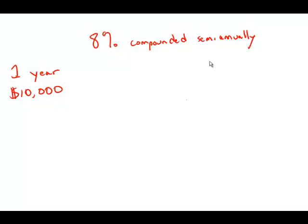Leona bought a one-year $10,000 CD that paid interest at an annual rate of 8% compounded semi-annually. What was the total amount of interest paid on this certificate at maturity?